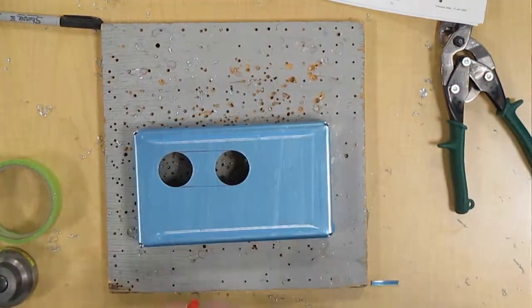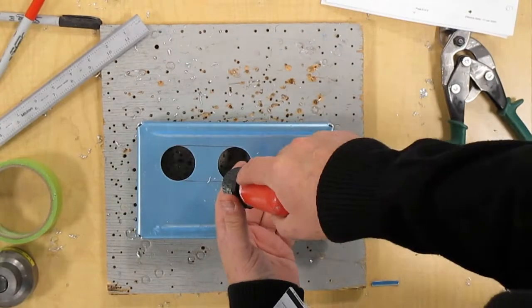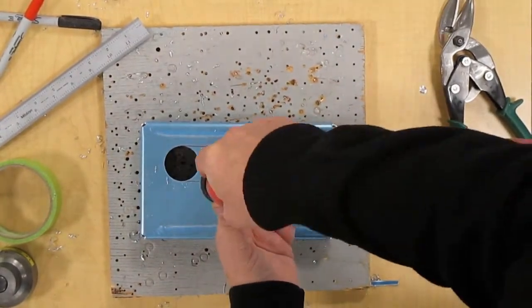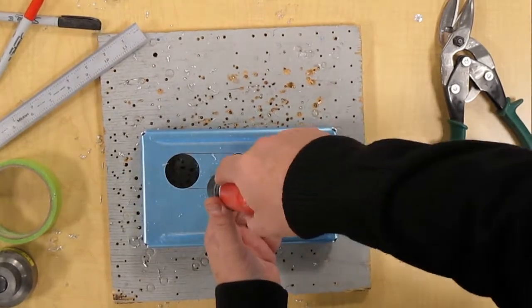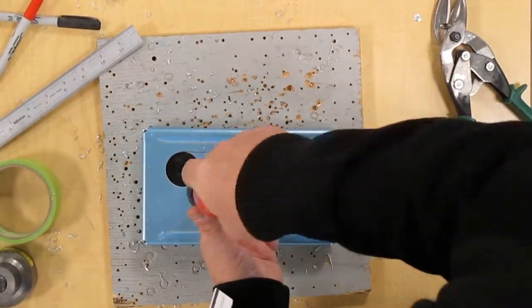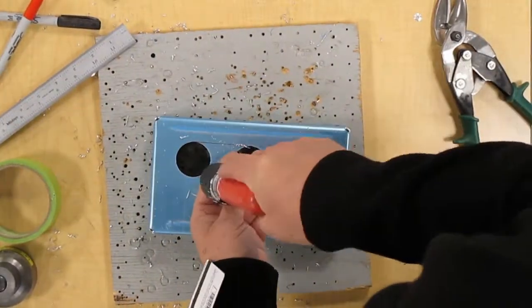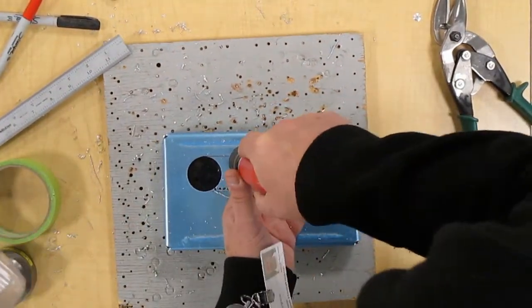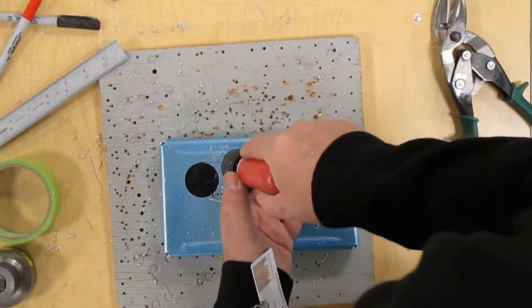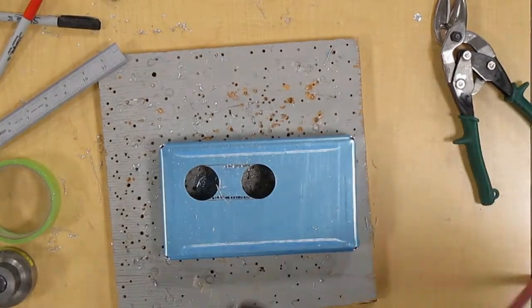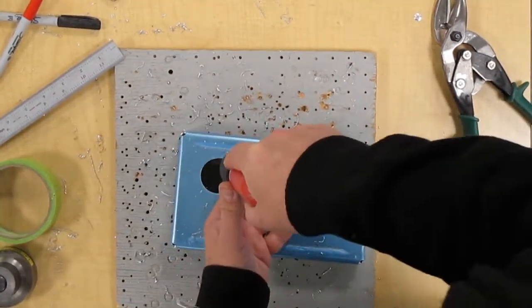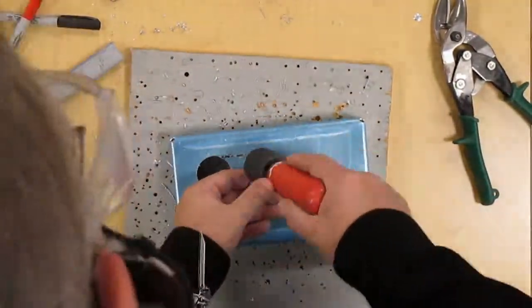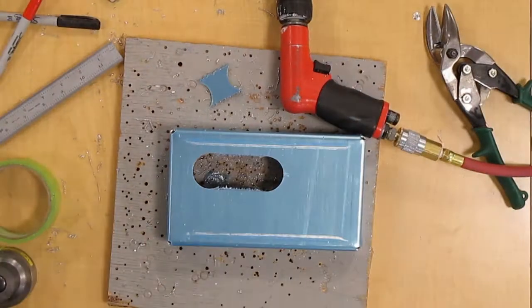We're going to mark lines in between the two circles, and then what we're going to do is a process called chain drilling. We're going to use like a number 30, number 40 drill bit, and we're going to drill holes across those two openings. Basically we're going to turn our drill into a saw. We're going to drill them as close as we possibly can all the way across, and then when we're finished, you can kind of move your drill on an angle and break all those little holes and break that centerpiece out.